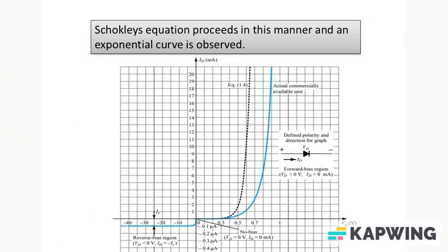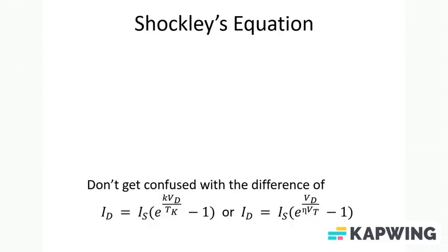I hope now you are well familiar with the Shockley's equation and this is how an exponential curve is obtained in case of a diode. Now let me quickly clarify one thing. There are students who are confused with two different equations. They said, ma'am, sometimes the Shockley's equation is mentioned as Is into e raised to the power k Vd upon Tk, and sometimes it is mentioned like this: Vd upon n Vt. So what is the difference, or why do they mention different terms?